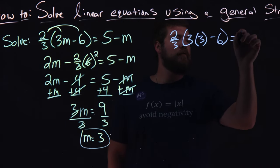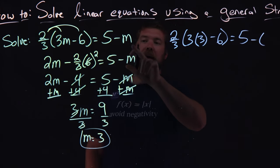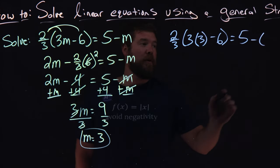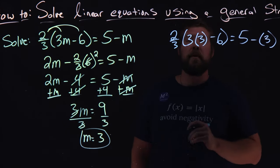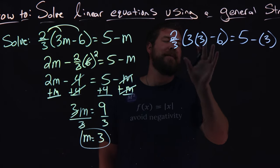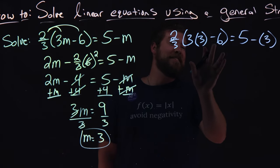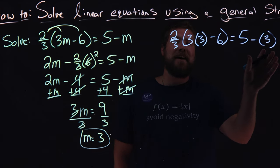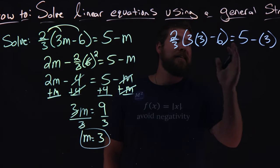Minus 6 is equal to 5 minus, and again, instead of m, I'm putting that 3. From there, we want to simplify. We're not really solving, sorry, simplifying. Keeping the left and right-hand side separate with the equal sign and seeing if they're equal.